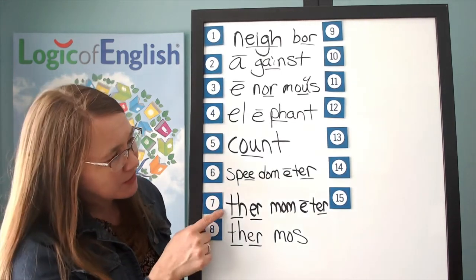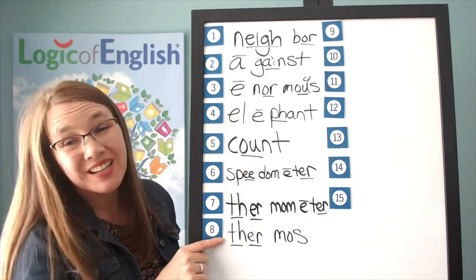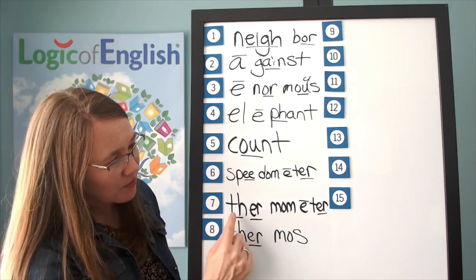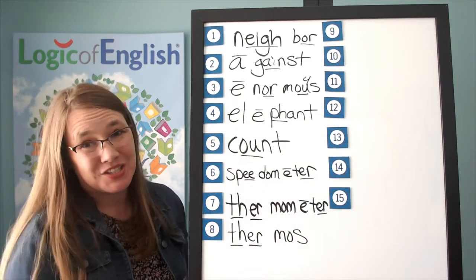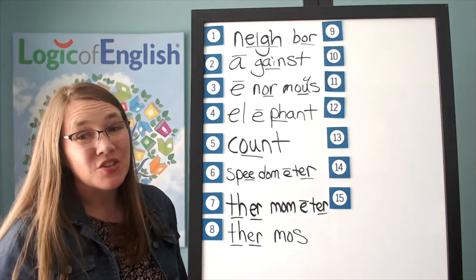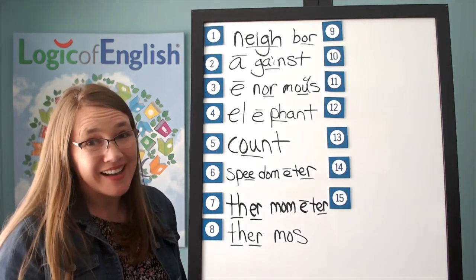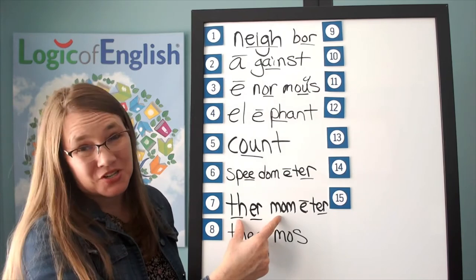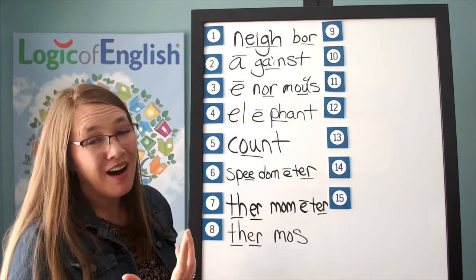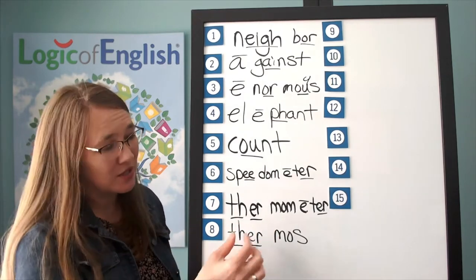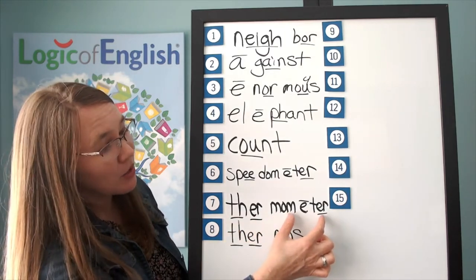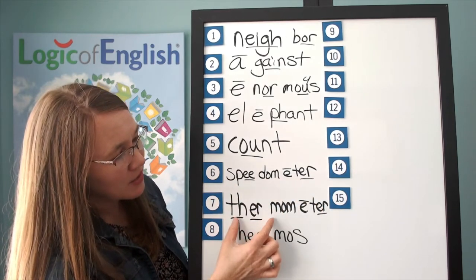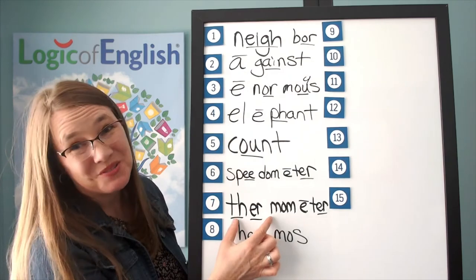What do you notice is the same between thermometer and thermos? They both start with therm. What does a thermos do? It keeps your soup or your drink hot — it keeps in the heat. Therm means heat. And a thermometer measures how hot — the heat or temperature. Therm means heat, meter means measure.